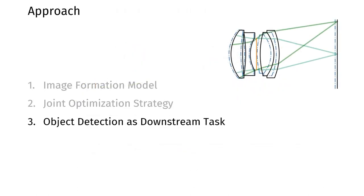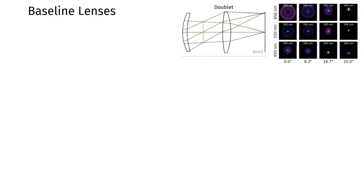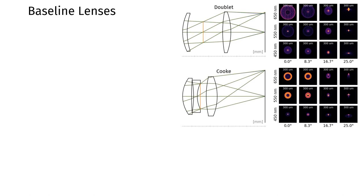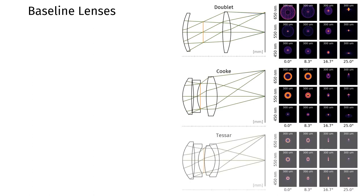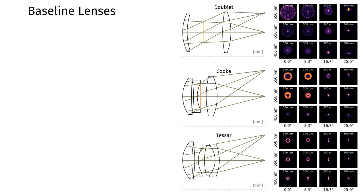We now apply our image formation model and joint design strategy to the downstream task of object detection. We consider three lens configurations in our experiment: a standard refractive doublet made of two elements, a Cooke triplet made of three elements that is generally suitable for moderate aperture and field of view imaging, and a Tessar lens that is similar to a Cooke triplet with one additional lens element.